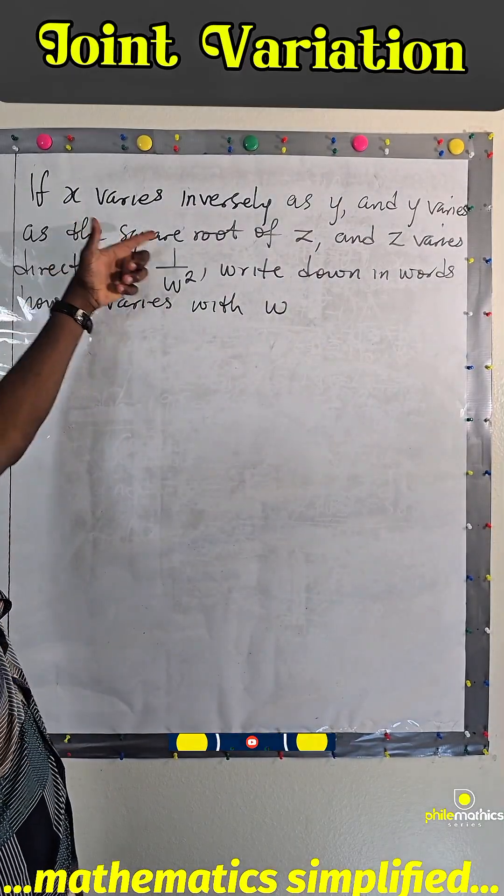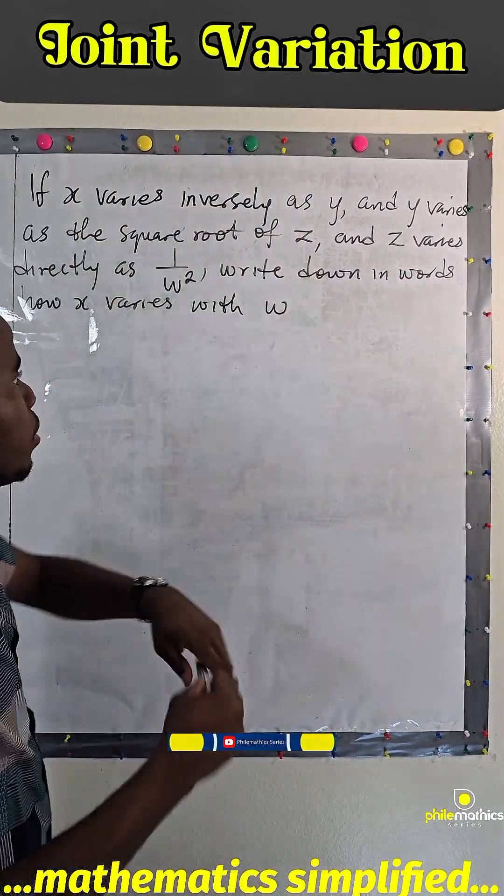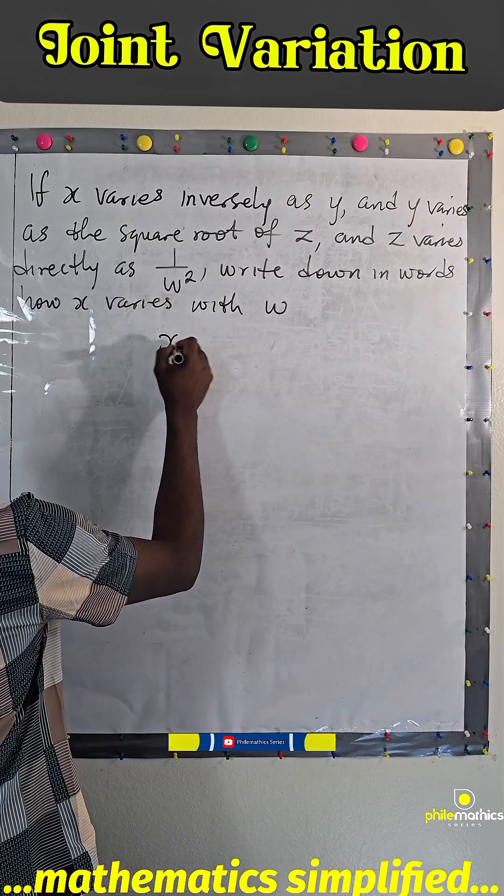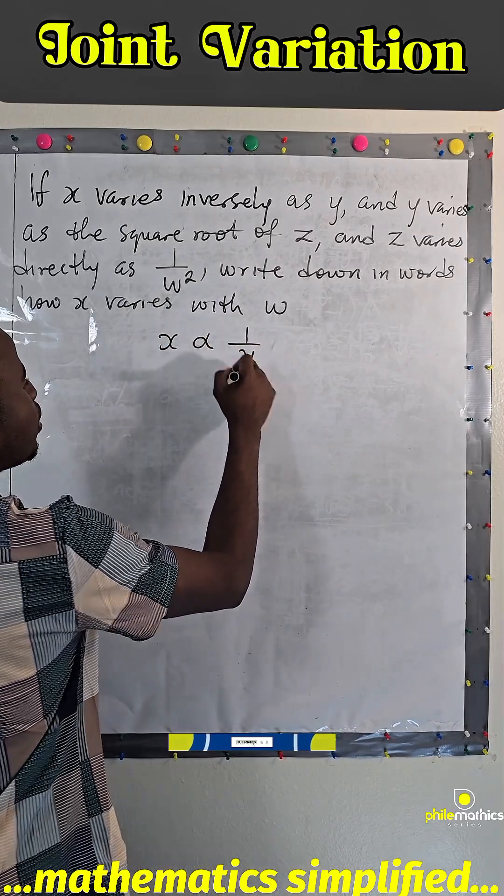We are told that if x varies inversely as y. Let's take it down. X varies inversely as y - this is what it means.